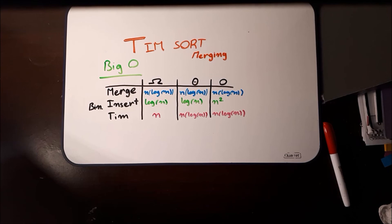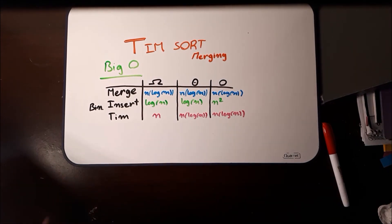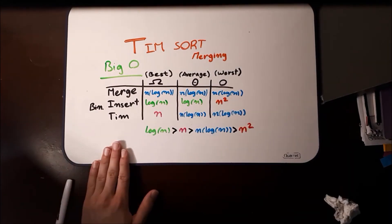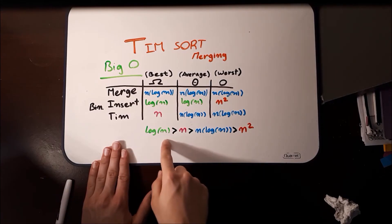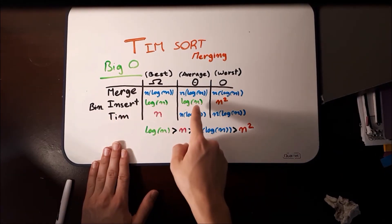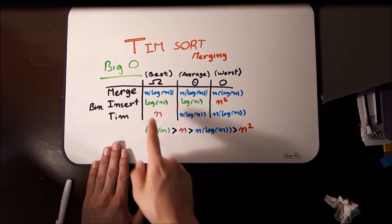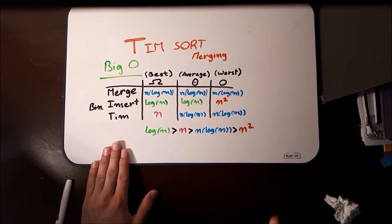Now to talk about efficiency. So here's a big O notation for TIMSORT and its component sorts, binary insert and merge sort. Just to make it a bit easier to read. So, at a glance, it seems that here, where log n is the average value for binary insertion sort, it seems that binary insertion sort is better than TIMSORT. And that merge sort and TIMSORT, you know, these values are all the same, right?